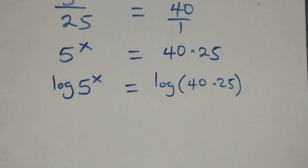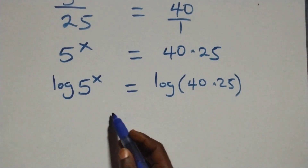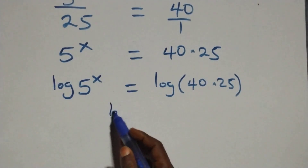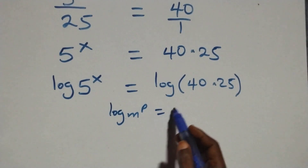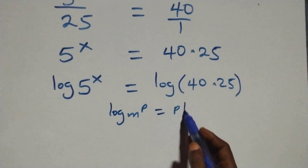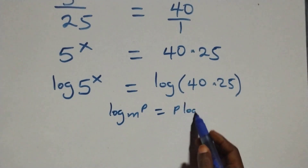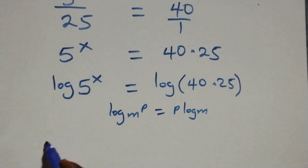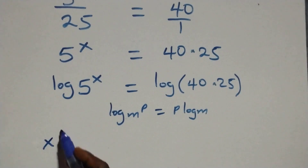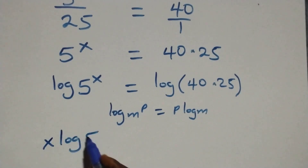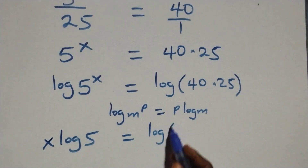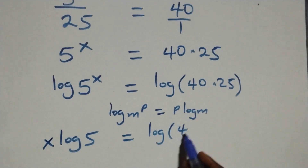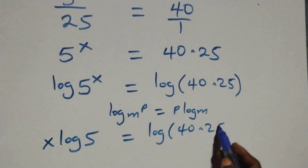We apply the power rule of logarithm: when we have log of n raised to power p, it is the same as p times log n. So this becomes x times log five equals log of forty times twenty-five.